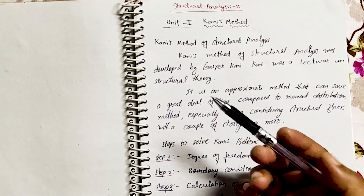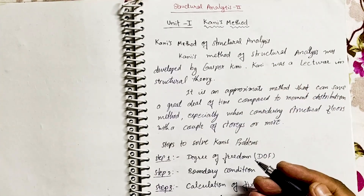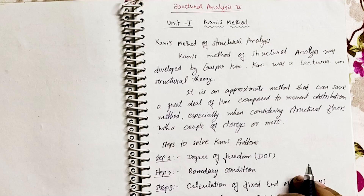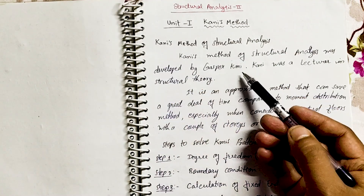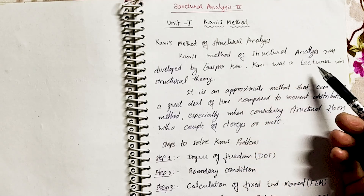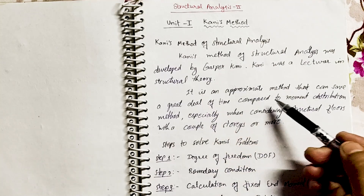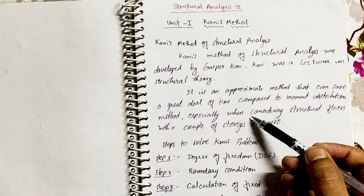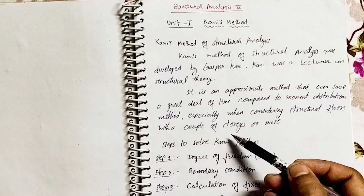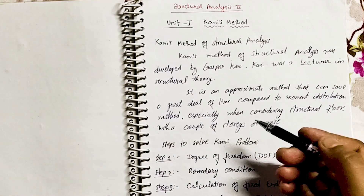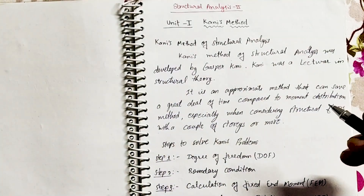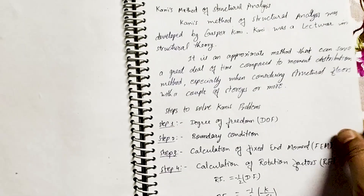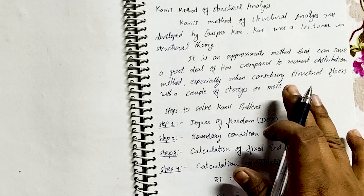Good morning. Today we are here to study Kani's method of structural analysis. Kani's method is covered in Unit 1 of Structural Analysis 2. It was developed by Gaspar Kani, who was a lecturer in structural theory. It is an approximate method that can save a great deal of time compared to the moment distribution method, especially when considering structural floors with a couple of stories or more. It does not give the exact answer, but it is the best method to analyze multi-story frames.